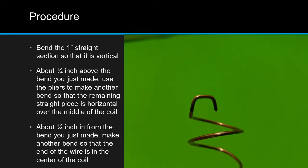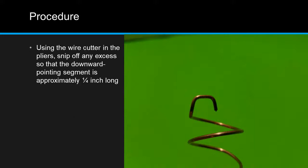About a quarter inch in from that bend, make another bend so that the end of the wire is pointed directly down the center of the coil. If necessary, using the wire cutter and pliers, snip off any excess so that the downward pointing segment is approximately a quarter of an inch long and in the position shown in the picture.